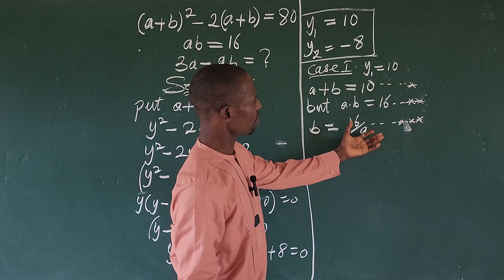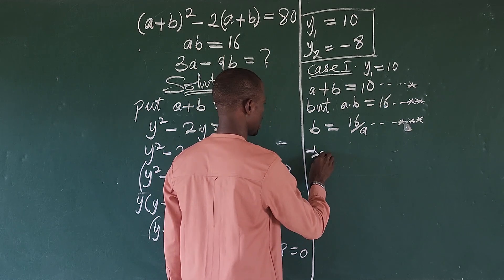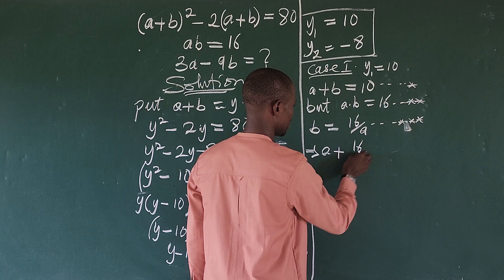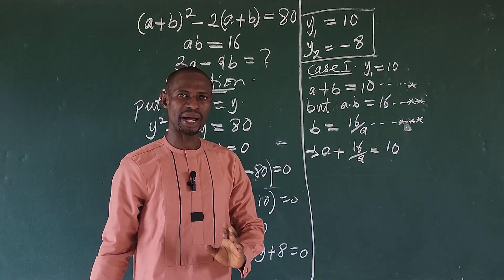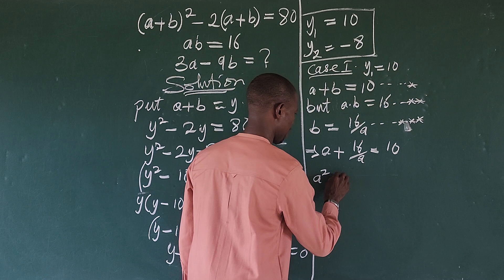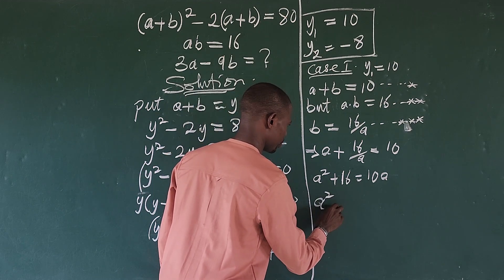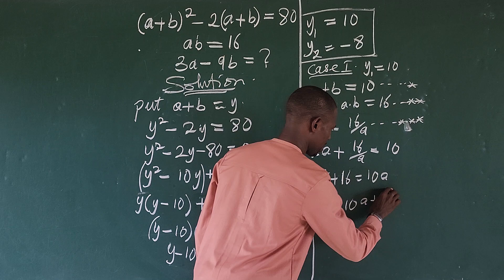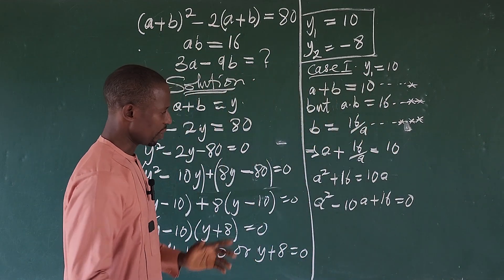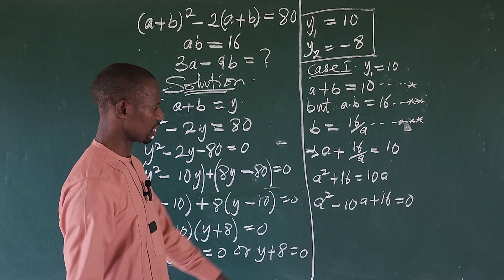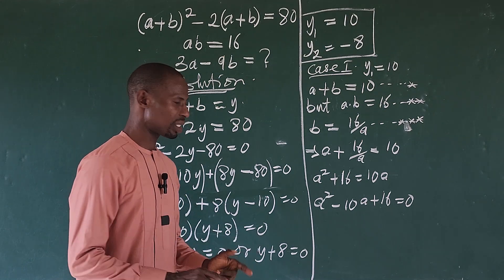Substituting b equals 16/a into a plus b equals 10 gives a plus 16/a equals 10. Multiplying through by a gives a² plus 16 equals 10a. Rearranging: a² minus 10a plus 16 equals zero. This is another quadratic. For factorization, we need two factors of 16 that multiply to give positive 16 and add to give minus 10.